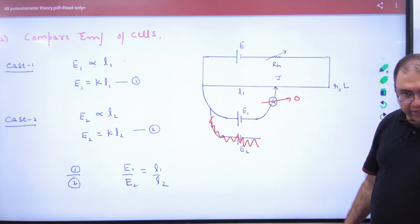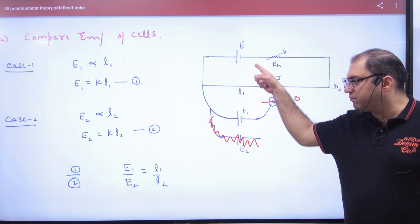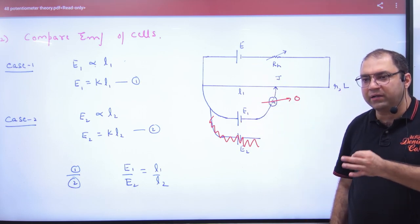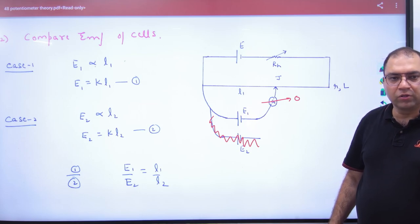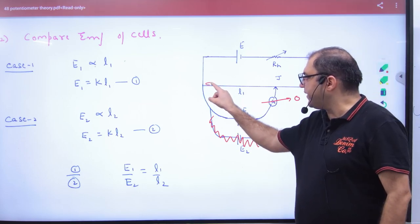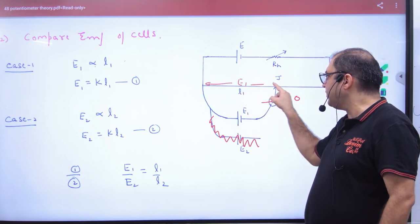So Galvanometer reading is 0. So this means this Potentiometer has no current of EMF battery. So if there is a potential difference E1, then what will develop here? E1.